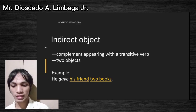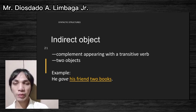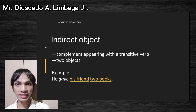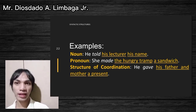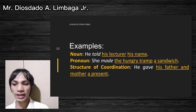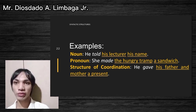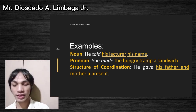The next type is the indirect object — a type of complement appearing with a transitive verb that involves two objects. Example: 'He gave his friend two books' — 'gave' is the transitive verb; 'his friend' and 'two books' are two complements. For noun: 'He told his lecturer his name' — 'told' is the transitive verb; 'his lecturer' and 'his name' are indirect objects. For pronoun: 'She made the hungry man a sandwich.' For structure of coordination: 'He gave his father and mother a present' — 'his father and mother' is one complement and 'a present' is another.